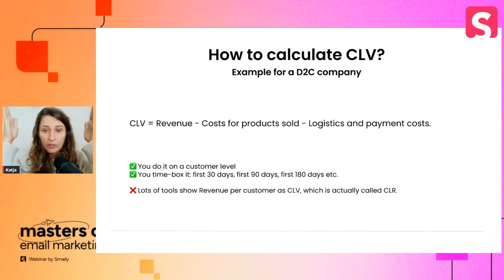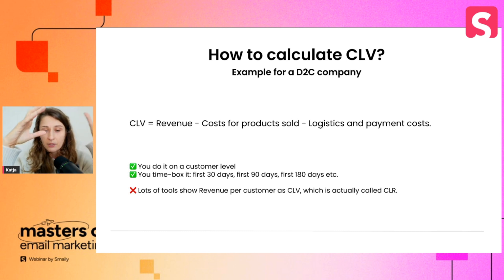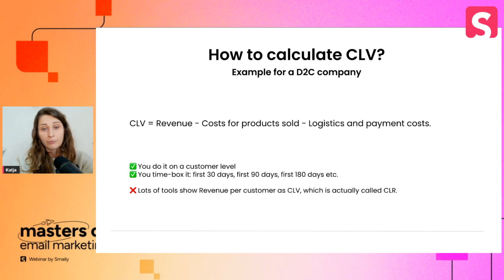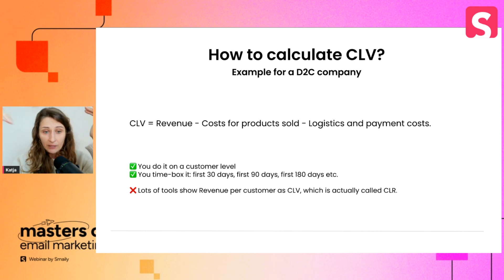Payment costs are the costs that occur on the platform — Shopify, for instance, takes about three percent of each transaction. CLV is calculated as net revenue minus costs of product sold minus logistics and payment costs. This is the real customer lifetime value. It can be calculated on a customer level, and you also need to time-box it — for instance, what is this customer's CLV within the first 30, 90, or 180 days.